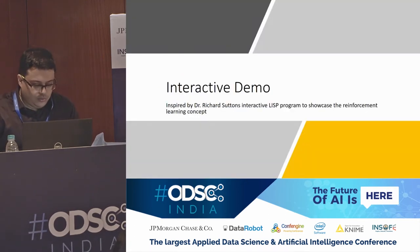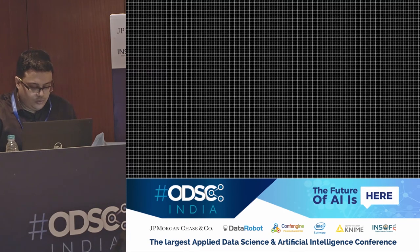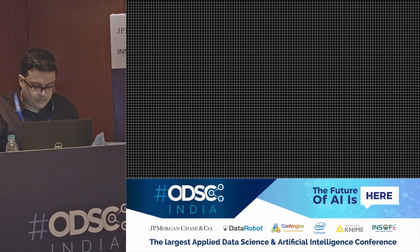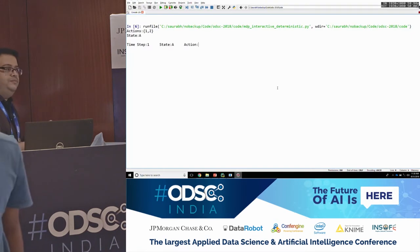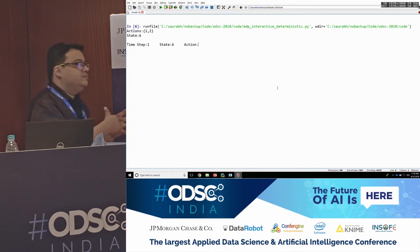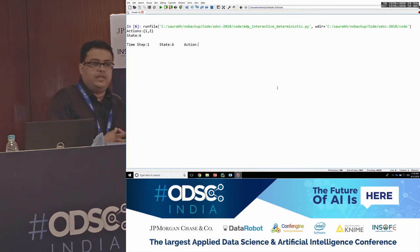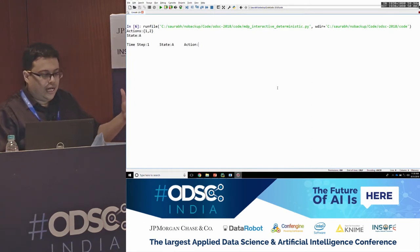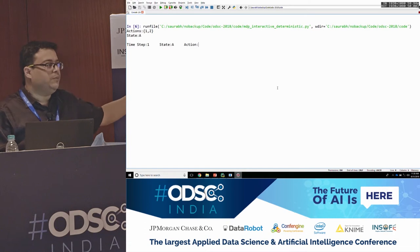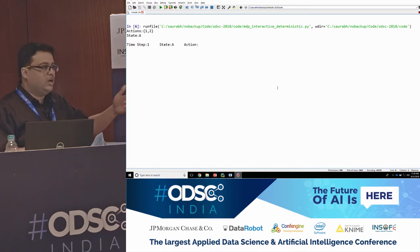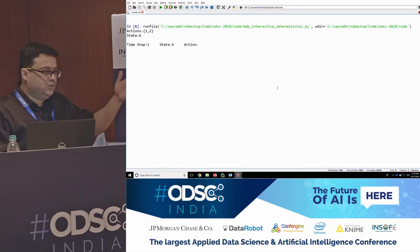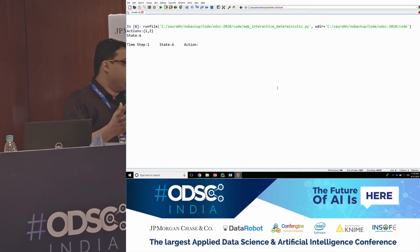Now let's get a feel for how the environment and agent work. Let's assume you are a reinforcement learner. We have some environment and the actions you can take are action one or action two, and there are two possible states.